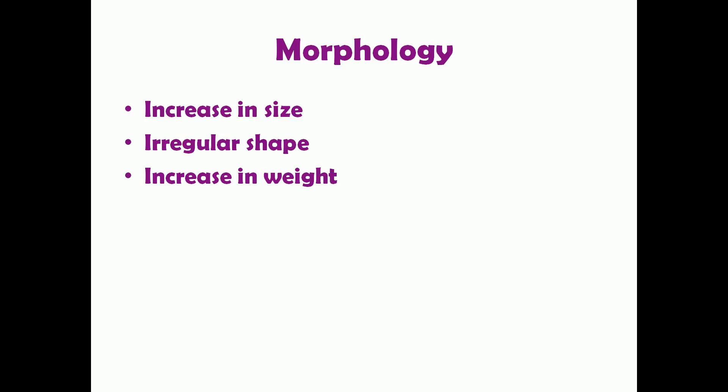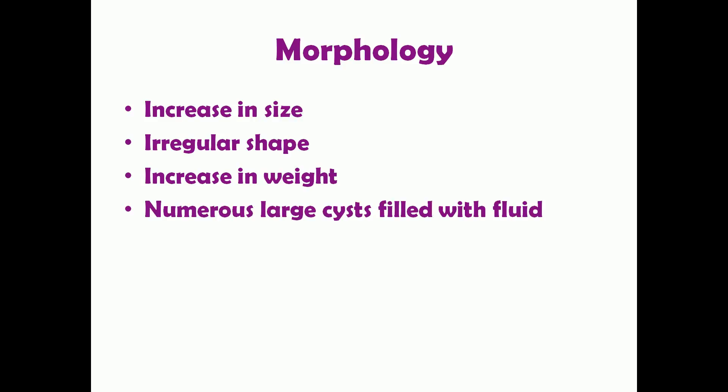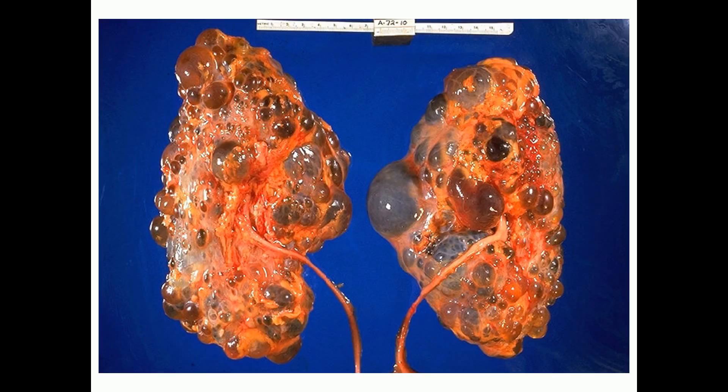In polycystic kidney disease, the kidneys show an increase in size, with an irregular shape and increased weight. There are numerous large cysts filled with fluid, which can reach up to about four centimeters in size. As seen in the image, the kidneys are greatly enlarged with an irregular external surface and many fluid-filled cysts — this is how an adult PKD-affected kidney looks.